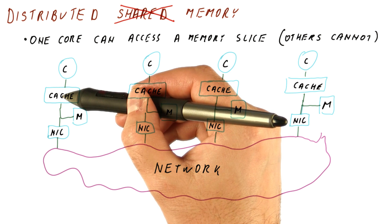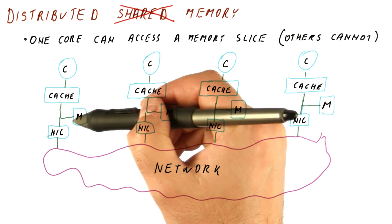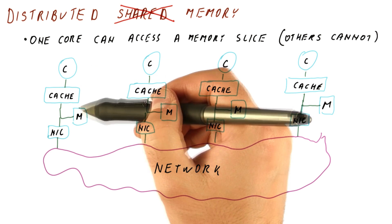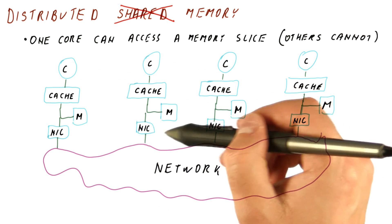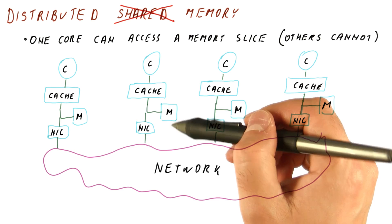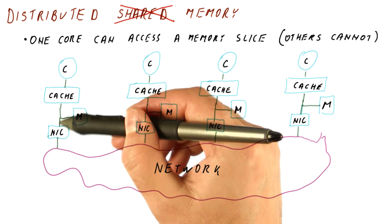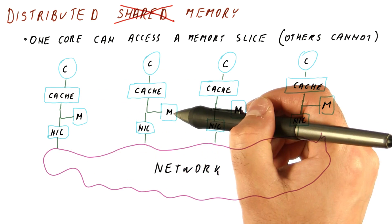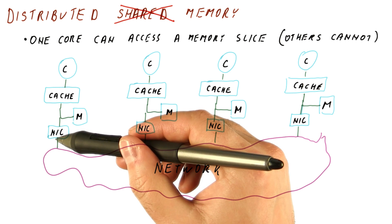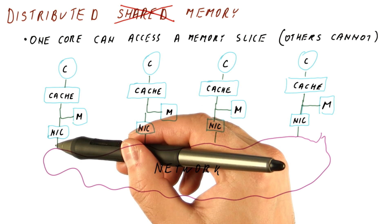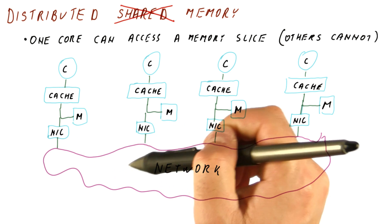But now, when a core has a cache miss, that cache miss goes directly to this memory. And if the core wants to access something that is in another core's memory, it cannot simply issue an access that misses in the cache and goes there. Now what it needs to do is actually create a network message using some sort of a send primitive in the operating system to actually send a request.